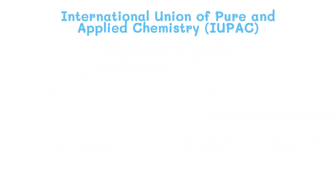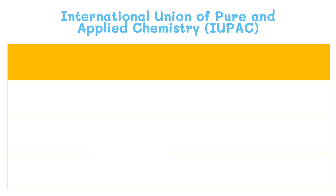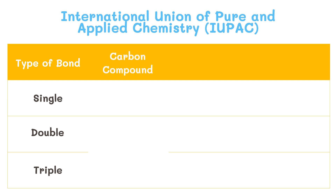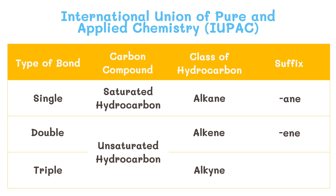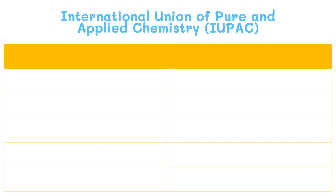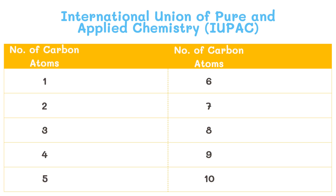The International Union of Pure and Applied Chemistry has established rules in order to systematize the naming of hydrocarbon molecules. First, determine the type of bond it has. Next, determine which type of carbon compound it is, whether it is a saturated or unsaturated hydrocarbon. Saturated hydrocarbons are called alkanes and will have the suffix "-ane". Unsaturated hydrocarbons are further classified as alkene or alkyne. Alkenes will be named with the suffix "-ene", while alkynes will be named with the suffix "-ine". We also determine the number of carbon atoms in the compound and look for the equivalent prefix.